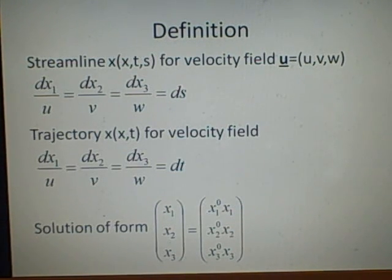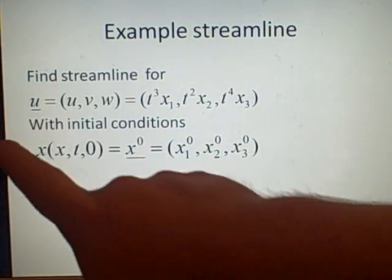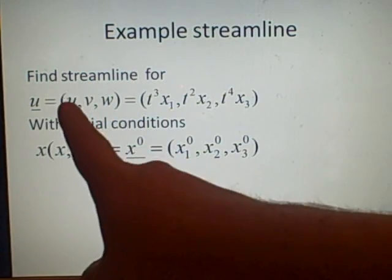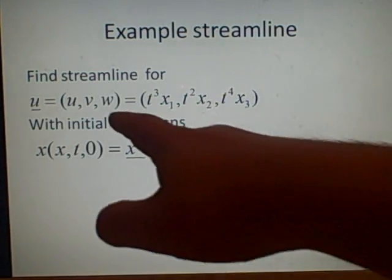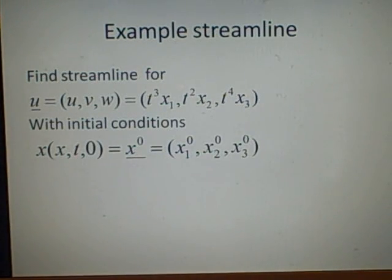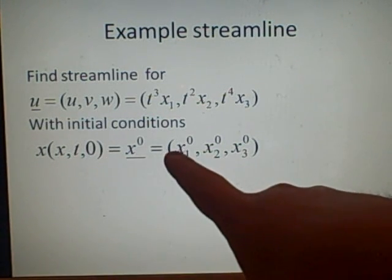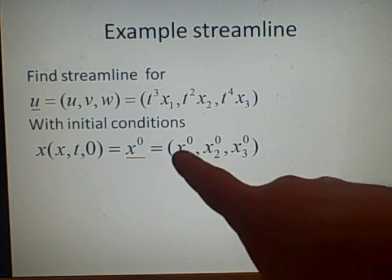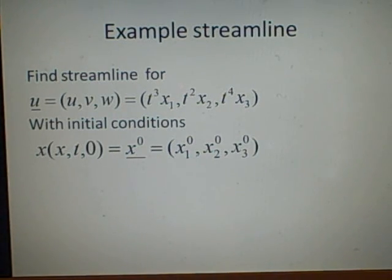At the initial point, x₁ will actually equal x₁⁰ in this case, x₂ will equal x₂⁰, x₃⁰, and then you want to multiply that by what the actual value you found is, which is x₁, x₂, x₃. This will make sense now with our first example, which is for the streamline. We're going to use this here, which is our velocity field u=(u,v,w) where u is t³ times x₁, v is t² times x₂, and w is t⁴ times x₃.